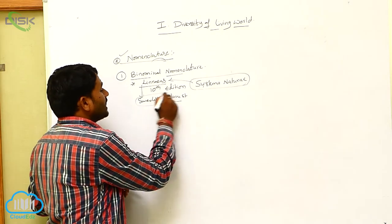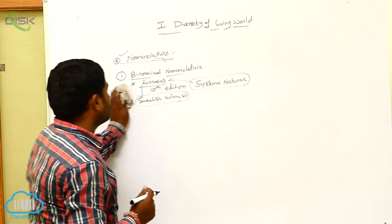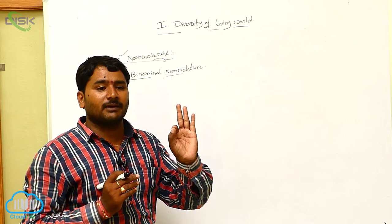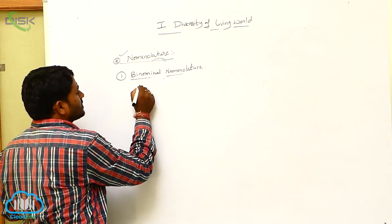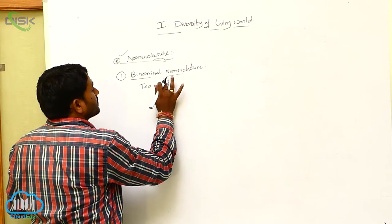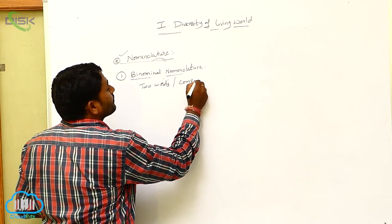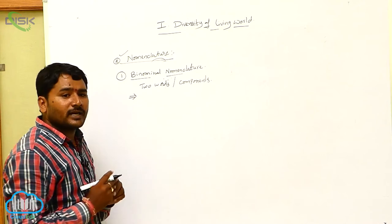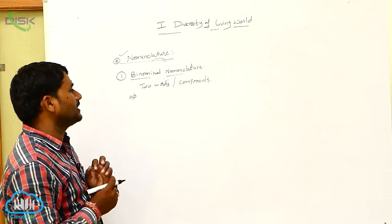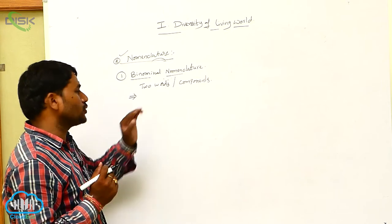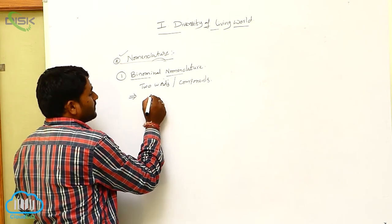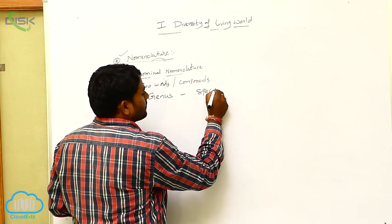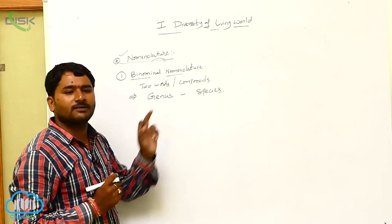Let us see what are the steps in binomial nomenclature. In binomial nomenclature, an animal is provided with a scientific name. That scientific name has two words, or two components. Two words possessing a scientific name is given in binomial nomenclature — 'bi' means two, 'nomenclature' means components. The first word refers to the genus, and the second word refers to the species. So in the scientific name, the first word is genus and the second word is species.